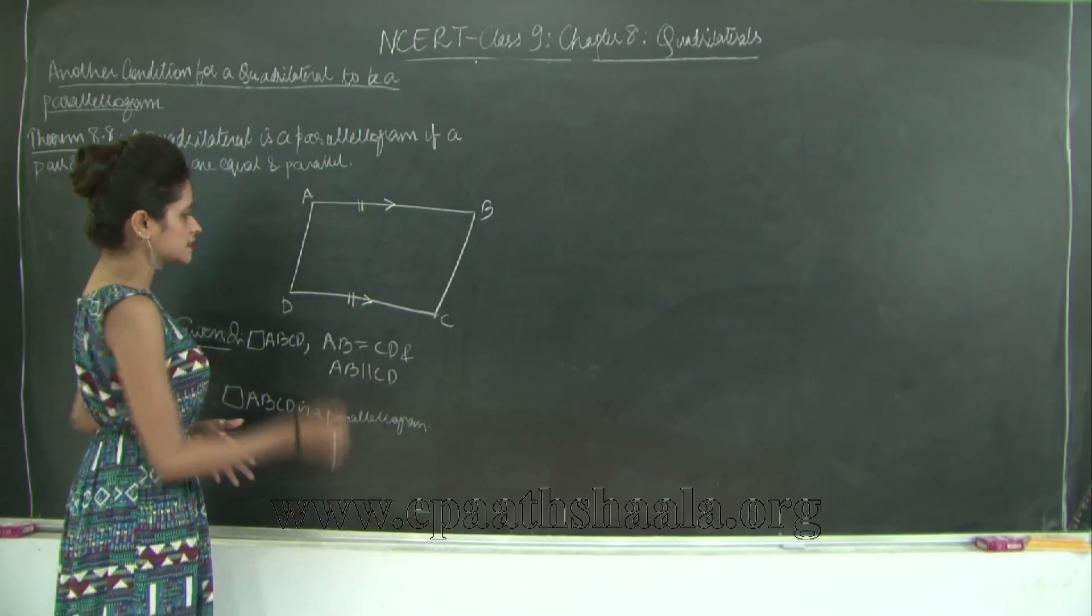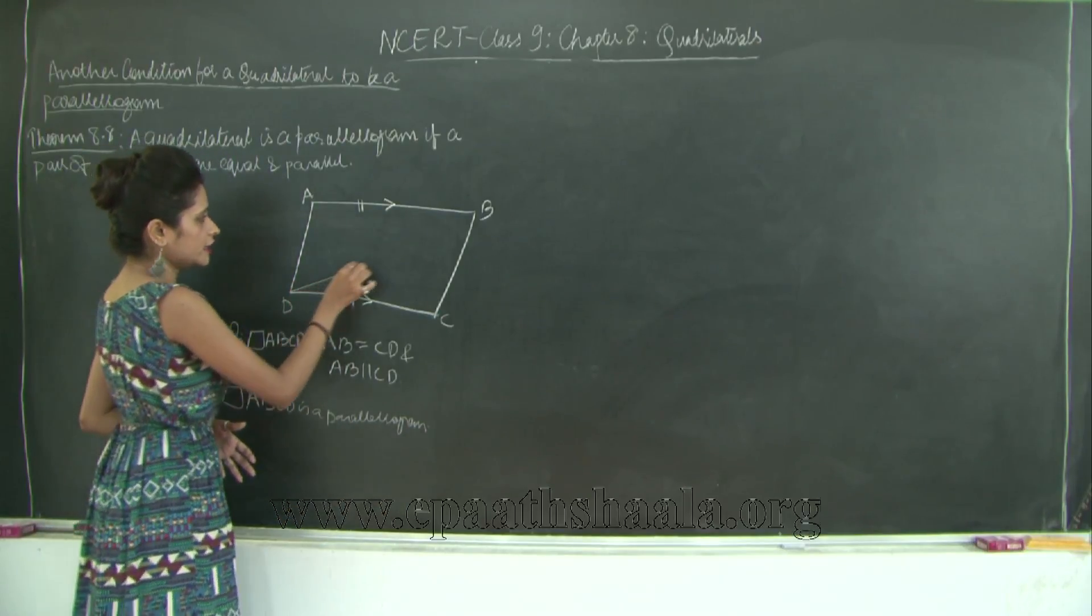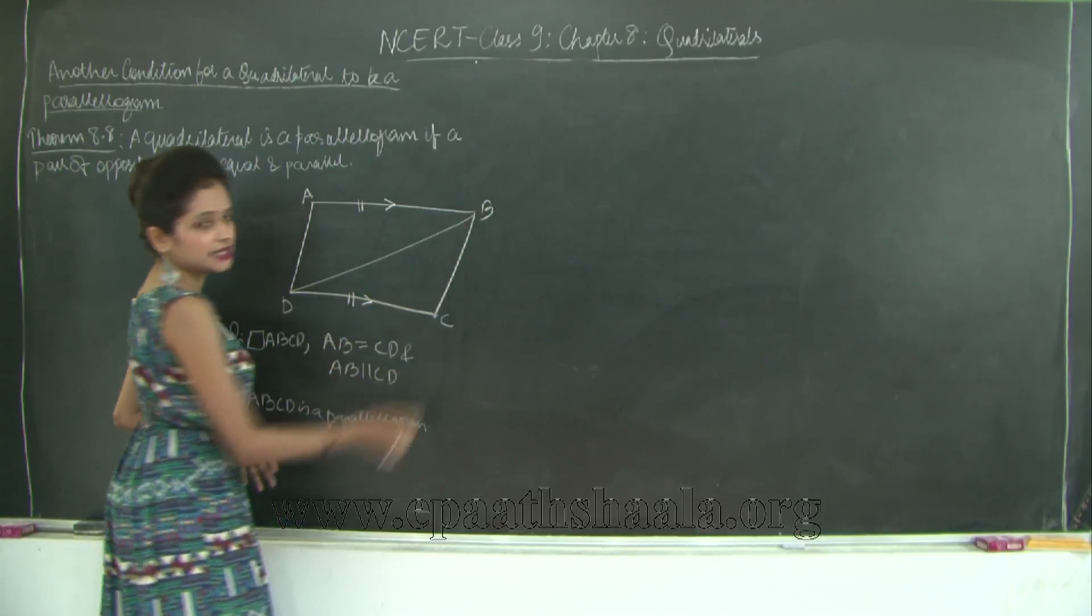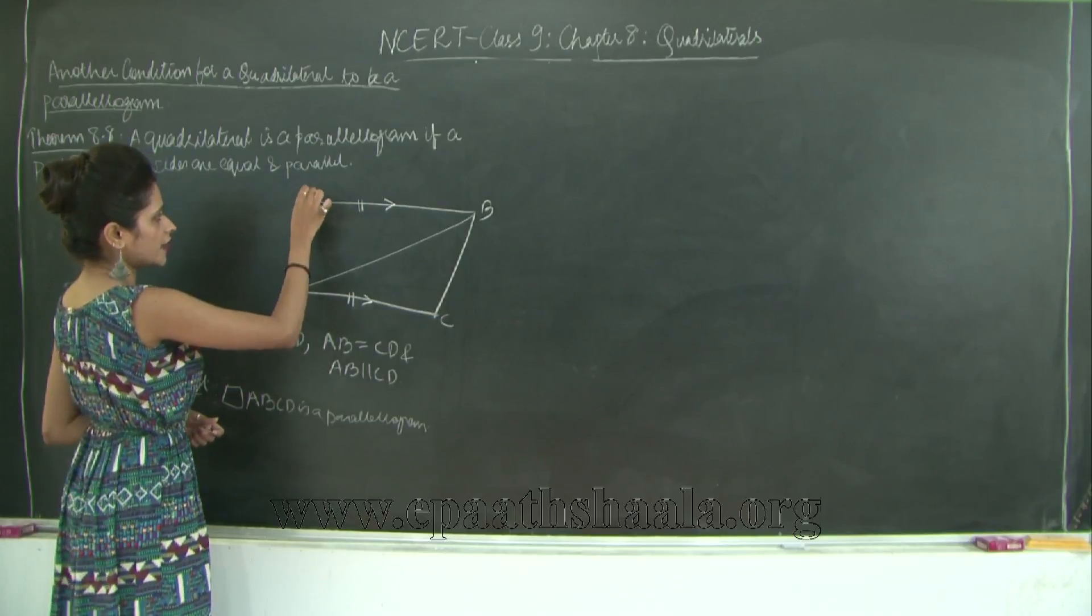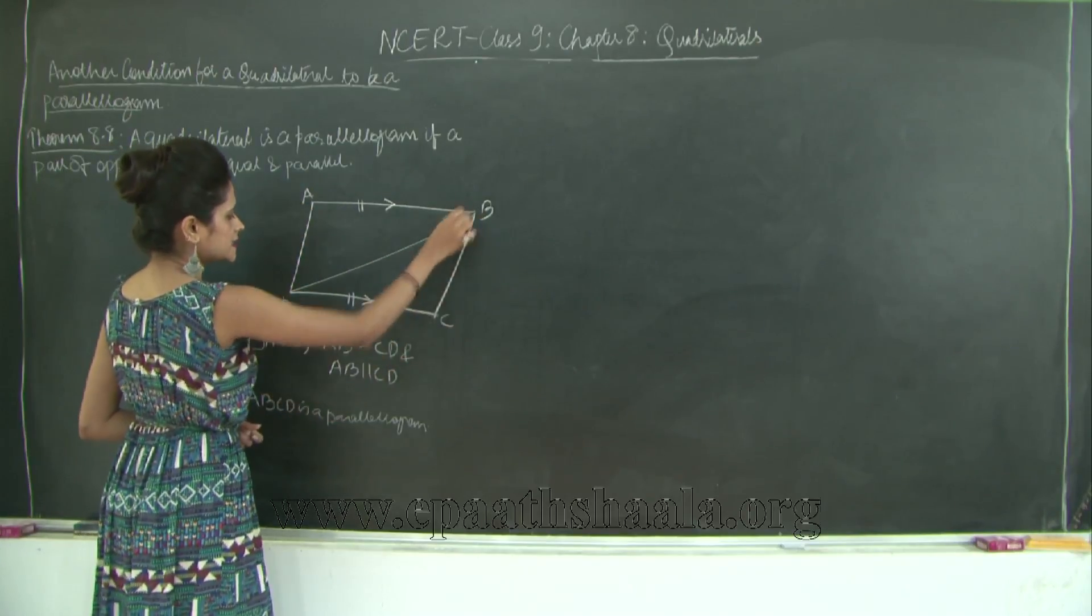So let us see how we will do this. If I join points D and B in order to form diagonal DB, I get two triangles: triangle ADB and triangle CBD.